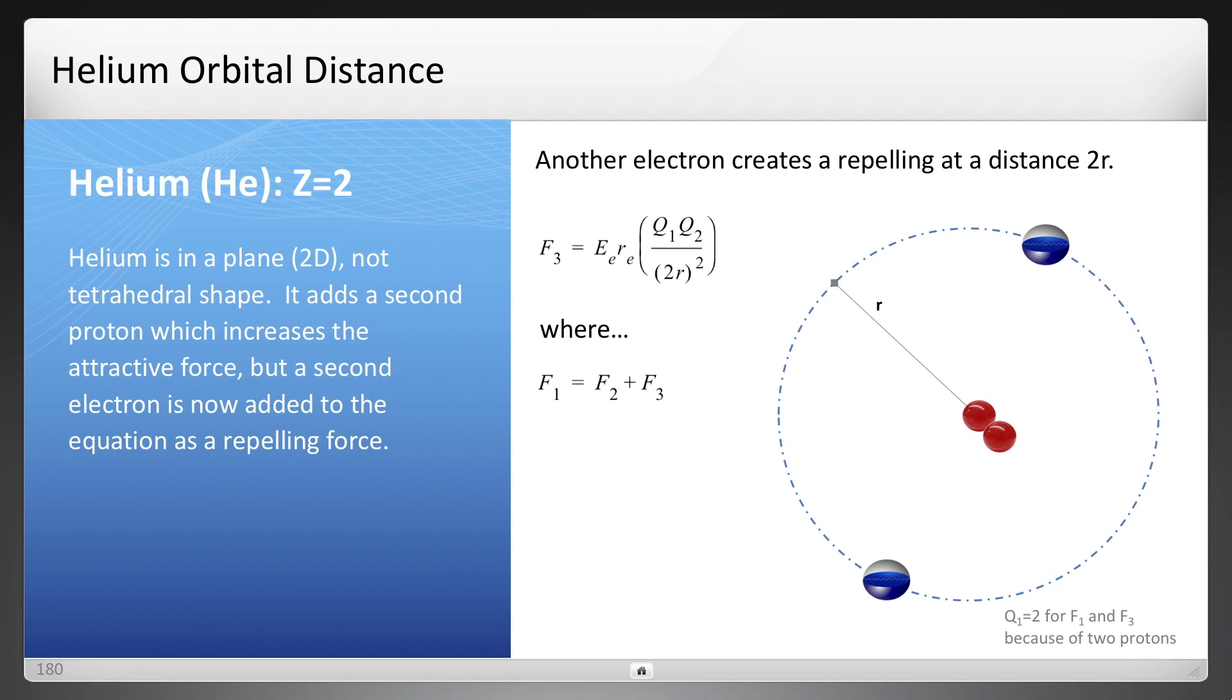So now here's helium, but a couple of changes here. First there's two protons, so now the q value becomes, for q1 is 2, because of two protons, for both the electric force equations, f1 and f3. All right, so what is f3? There is another electron that has been added, and its distance is across on the other side from that electron being measured, so it's at a distance of 2r.